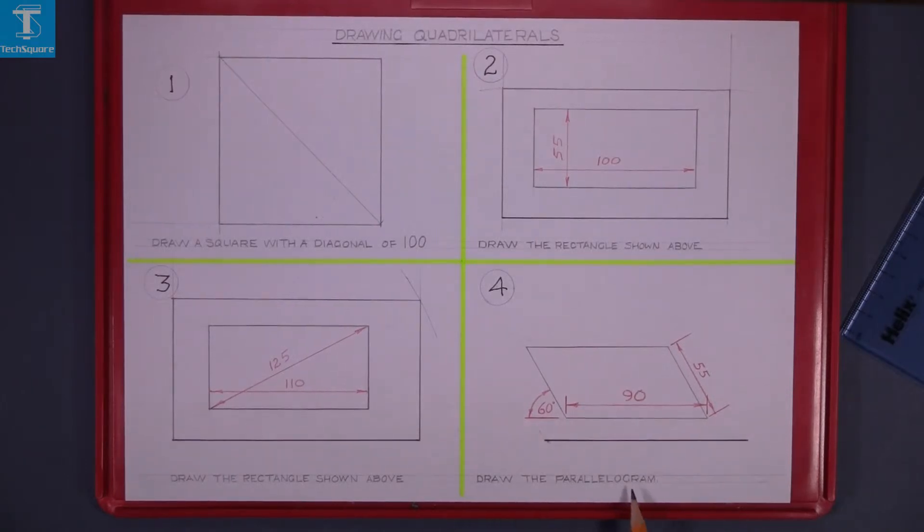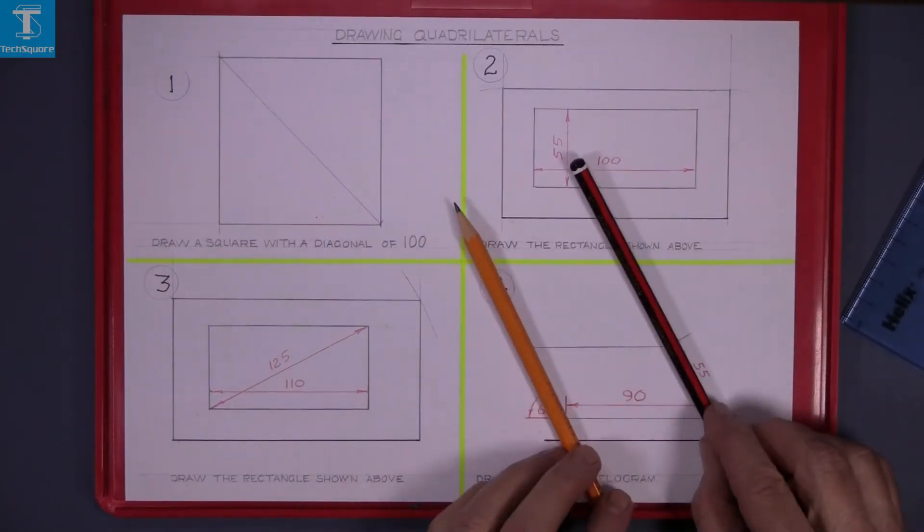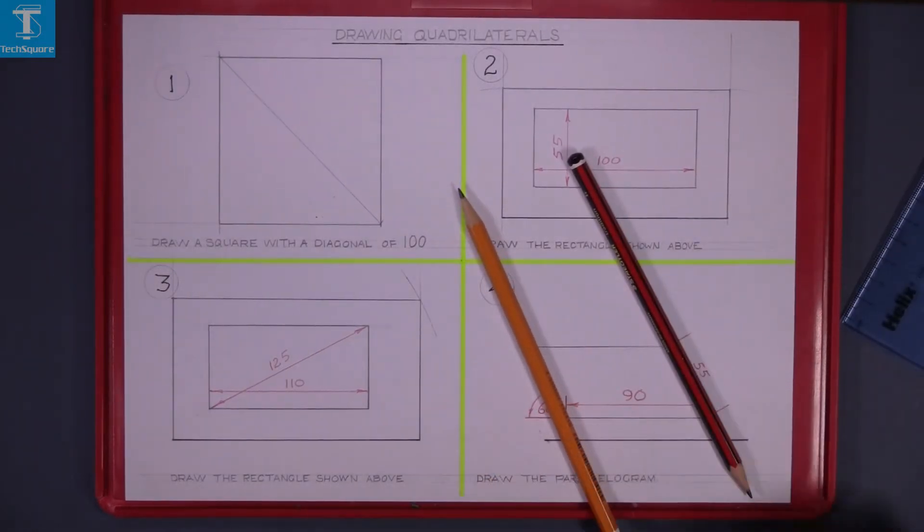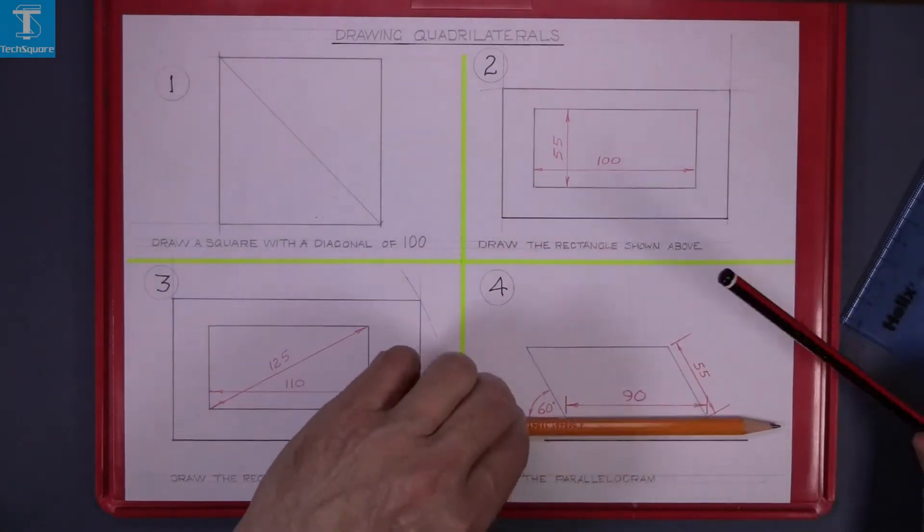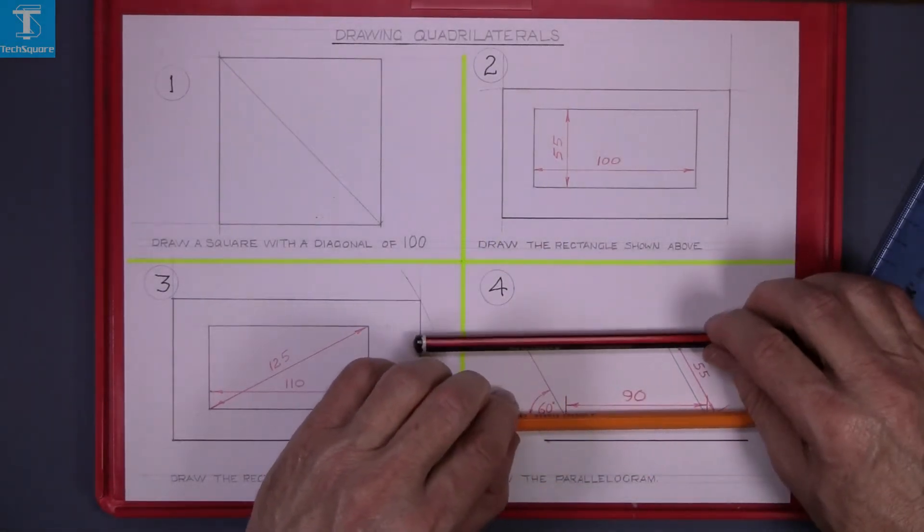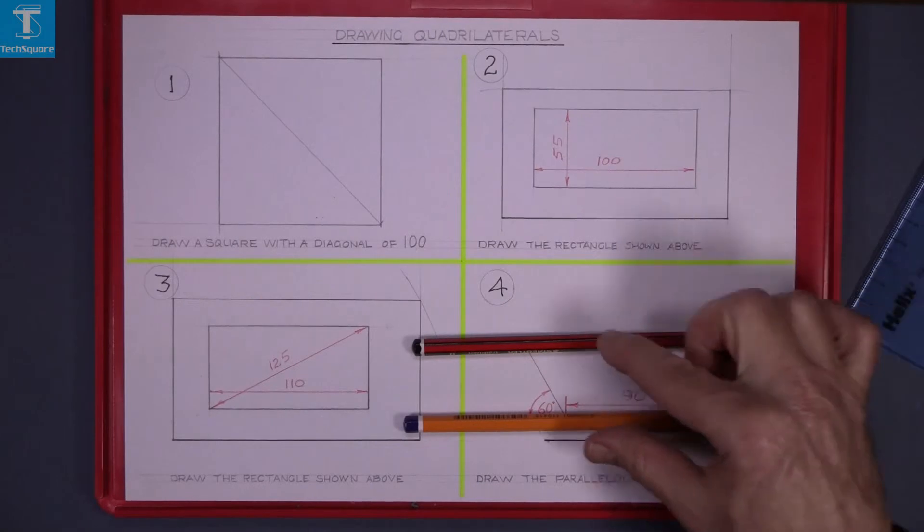Question 4 then is draw the parallelogram shown. So with a parallelogram there are two sides parallel, in other words these two pencils they will never meet. The two lines parallel.